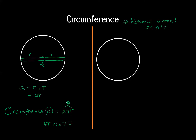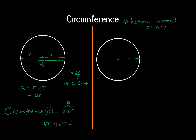We all know that π is a constant. π can be 22/7, or it can also be approximately equal to 3.14. Now let's say we need to find the circumference of this circle, and we have the radius as 7 centimeters. So we are going to use the formula C = 2πr.